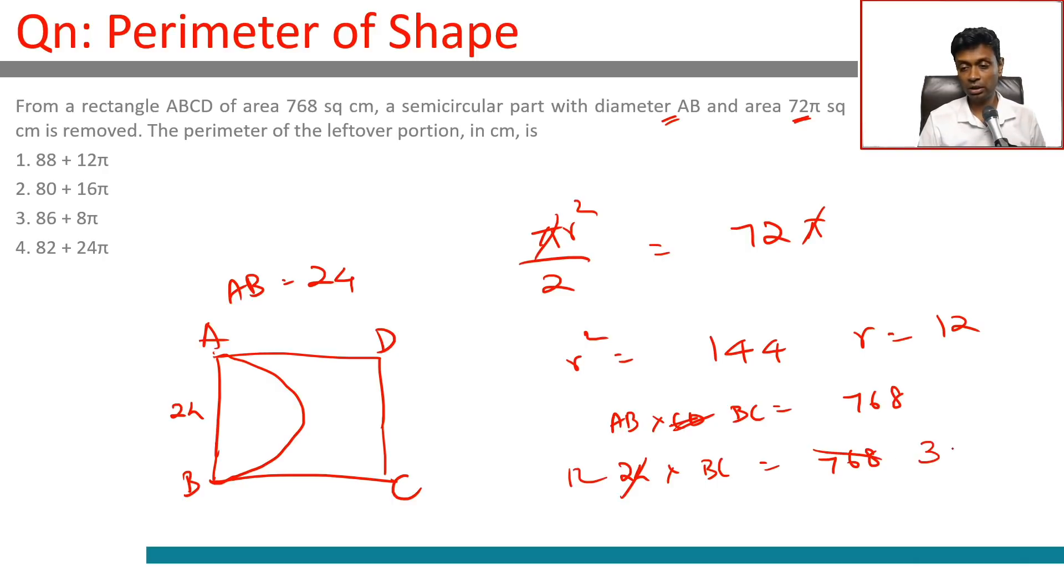Dividing step by step: 768 ÷ 24 = 384 ÷ 12 = 192 ÷ 6 = 96 ÷ 3 = 32. Therefore BC = 32.